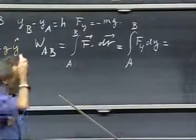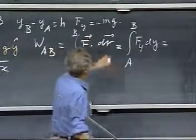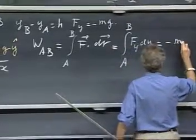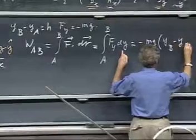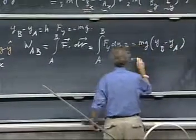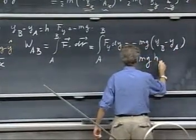And that equals minus Mg, because we have the minus Mg, times y of B minus y of A. So that is minus Mg times h.